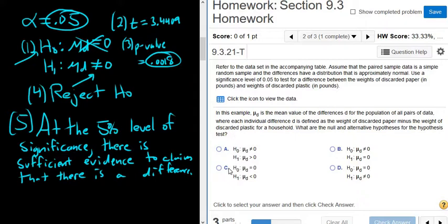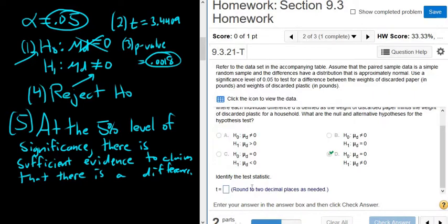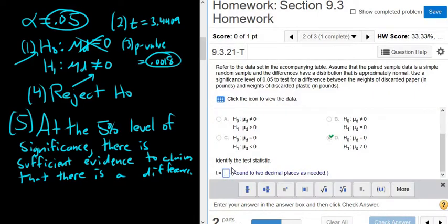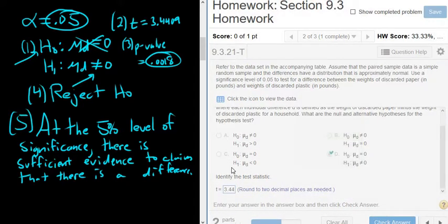So let's go ahead and answer the question. So it's D for the first one. The test statistic, they want two decimals. It's really easy to mess up in these problems. 3.44. And they're long. So if you mess up at the end, you've got to go through it again.